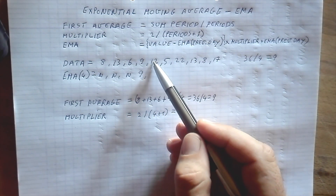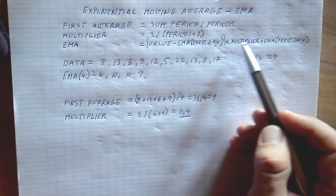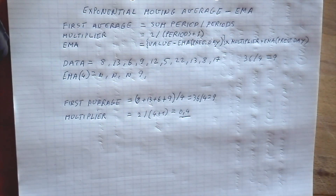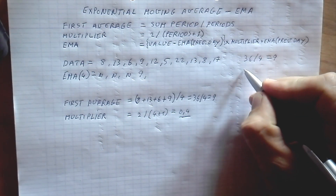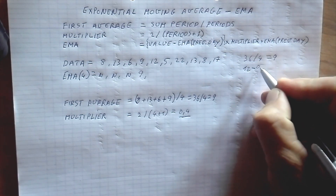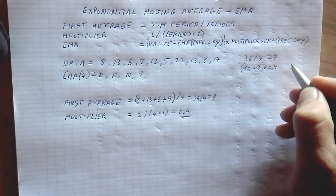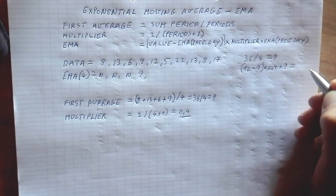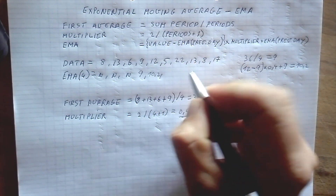To calculate the next EMA values, we take the current value — in this case 12 — minus the EMA from the previous day, which is 9, times the multiplier 0.4, plus the EMA from the previous day which is 9 again. So: (12 - 9) × 0.4 + 9 = 10.2.